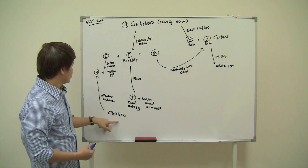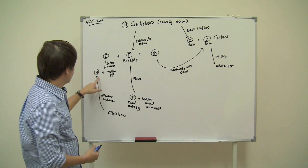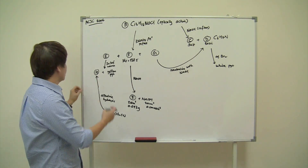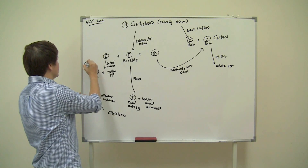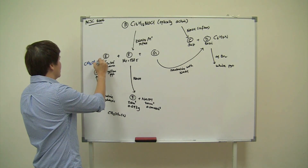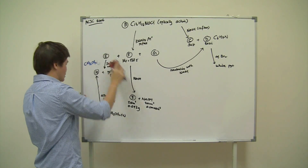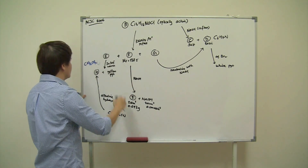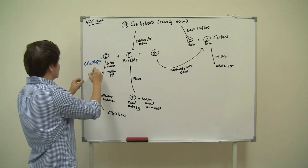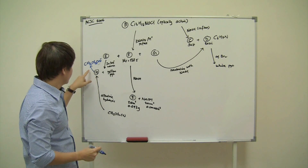So this three-carbon nitrile on alkaline hydrolysis gives us H. As we learn from our notes, nitrile alkaline hydrolysis gives a carboxylate salt. So H will contain three carbons and will be a three-carbon carboxylate salt. That's the first structure solved.